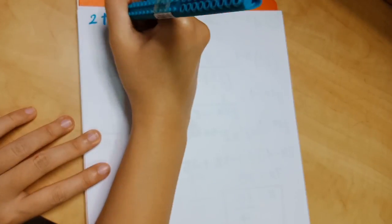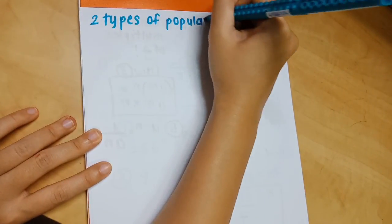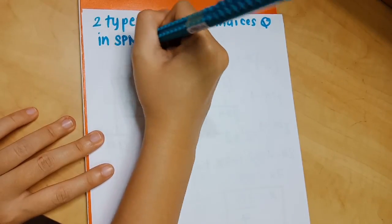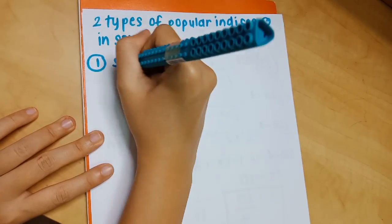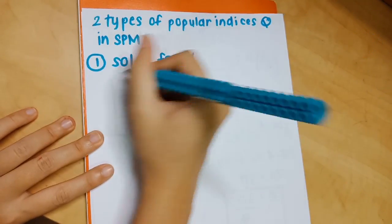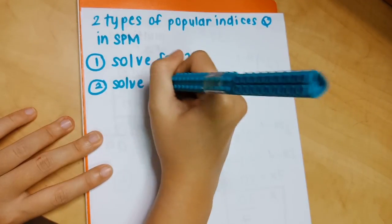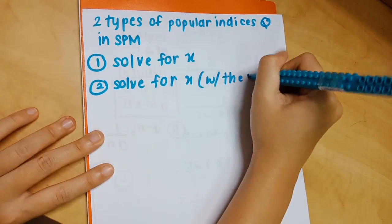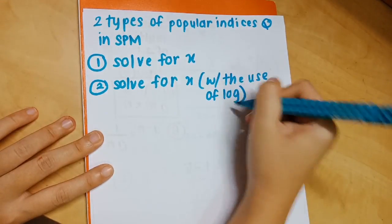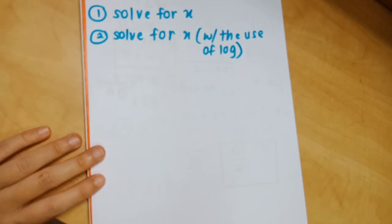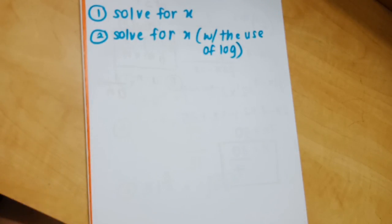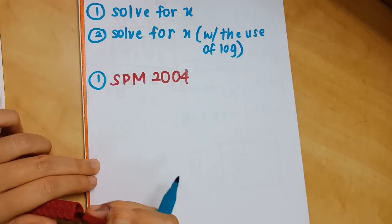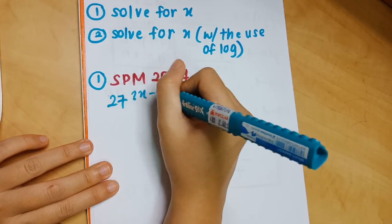For the next part of today's video, we'll go through the two types of popular indices questions in SPM. The first type is to solve for x directly. The second type is also to solve for x, but using logarithm.